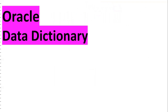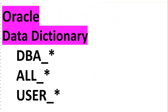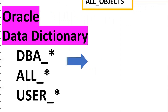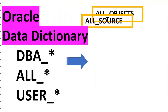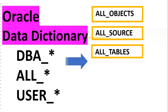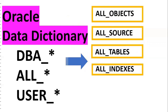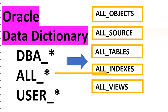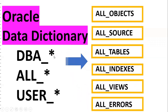The Oracle Data Dictionary includes views like DB_ALL_USERS, ALL_OBJECTS, ALL_SOURCE, ALL_TABLES, ALL_INDEXES, ALL_VIEWS, and ALL_ERRORS. These are Oracle-provided views, and access is based on privilege — prefixed with DB_, ALL_, or USER_. They give information about tables, objects, indexes, views, and more.